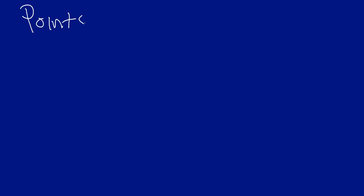This is very basic information, something you would teach on the first day of class in geometry. A point — something like this right here — is like the smallest unit of measurement that you're going to find in geometry. Some characteristics of a point: it has no size, so no length or width, and it has no dimensions.